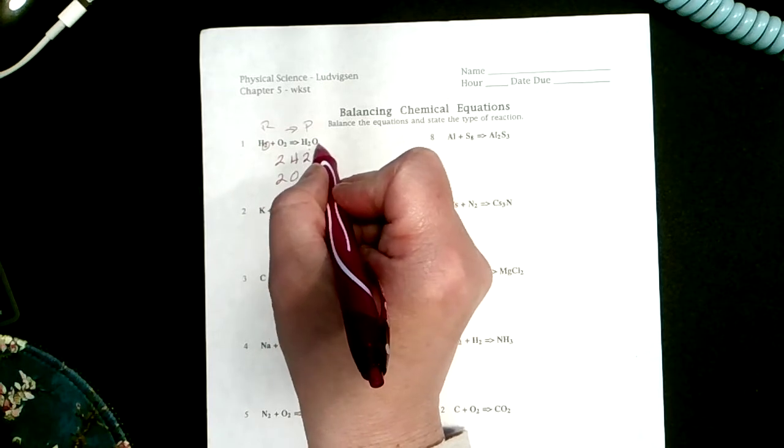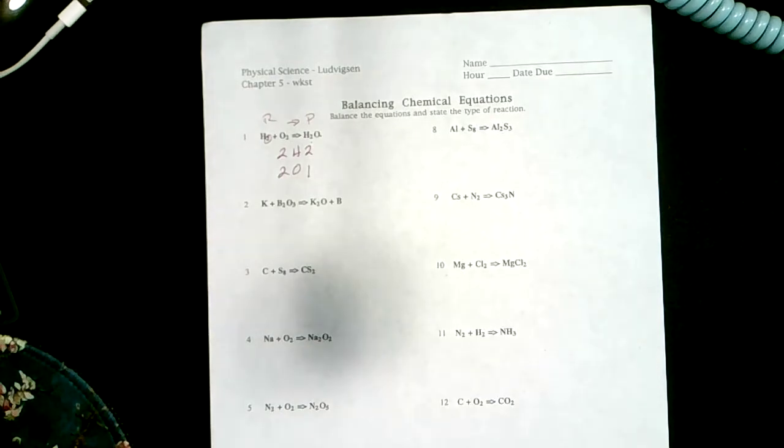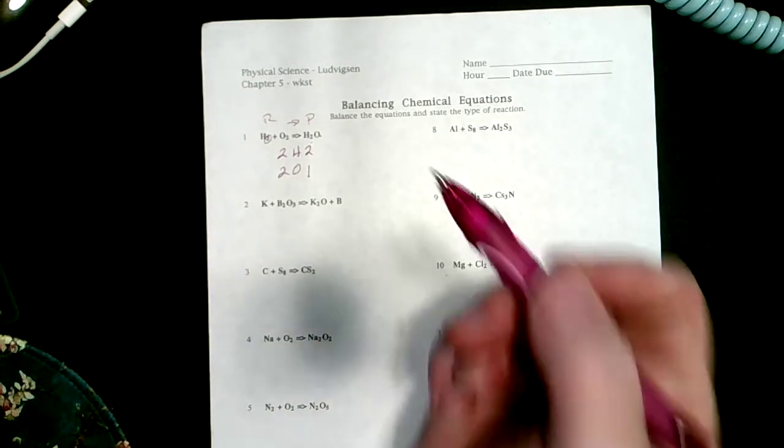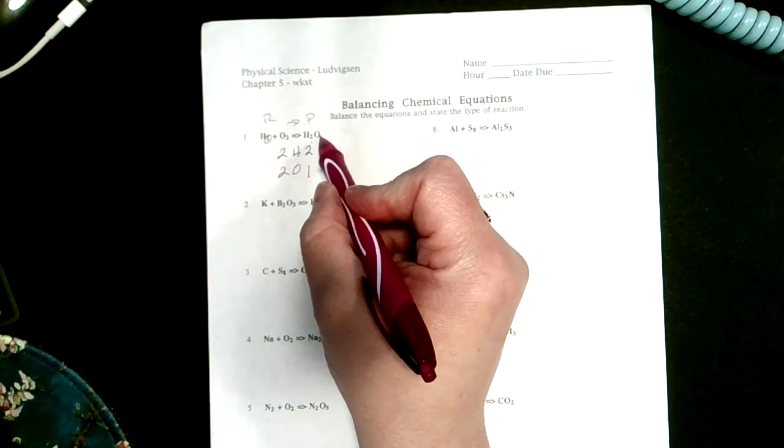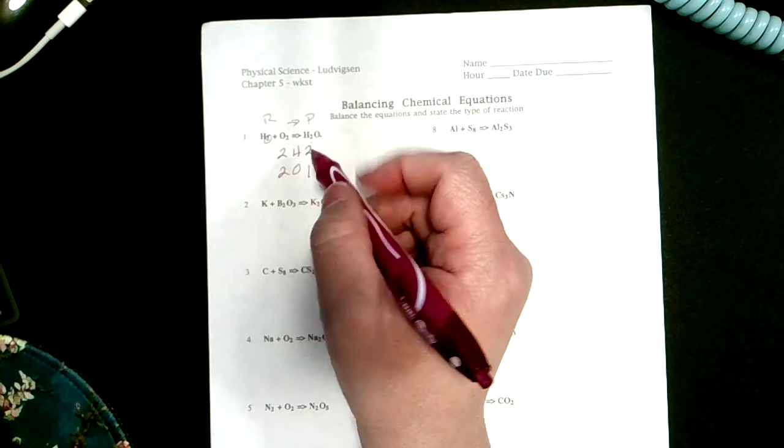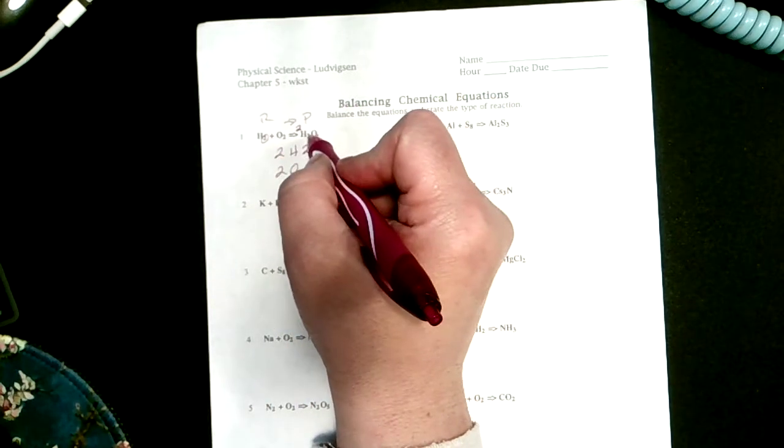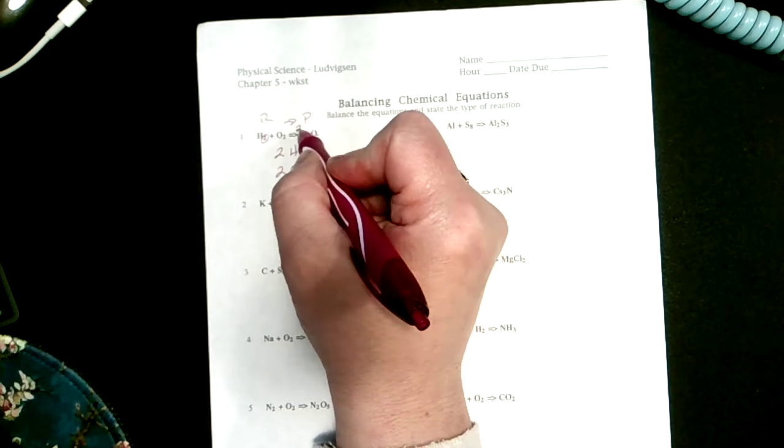It's always easier to balance the one that has many things stuck together, and on this side it so happens that this oxygen has to have, well, what's one times two is two. So let's put a coefficient of two there. Now I've got two times two or four hydrogens, two times one is two oxygens. My oxygens are now balanced.